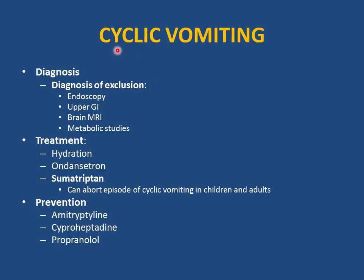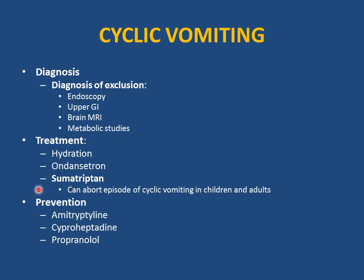Cyclic vomiting is a diagnosis of exclusion — rule out organic causes with endoscopy, upper GI, brain MRI, and metabolic disorder workup. Treatment is mainly supportive: hydration with fluids and electrolytes, ondansetron (Zofran) to prevent vomiting and reduce dehydration. Sumatriptan can abort cyclic vomiting episodes just as it aborts head migraine. Prevention uses the same medications as head migraine prophylaxis: amitriptyline, cyproheptadine, or propranolol.